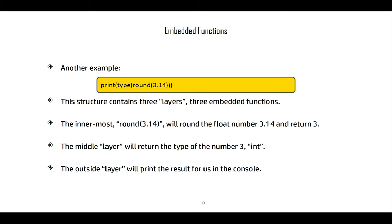What if we print type of round of 3.14? There's three embedded functions here—notice there are three closing parentheses to match the three opening parentheses. If this were run, you should see that this type is integer, because the round function outputs integers.